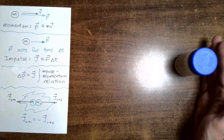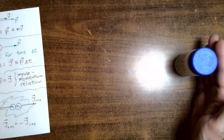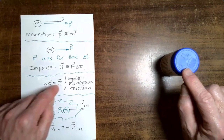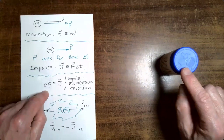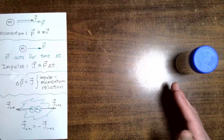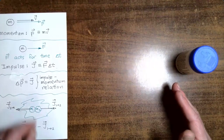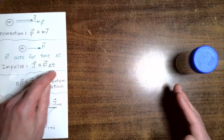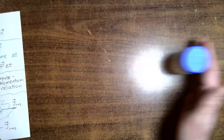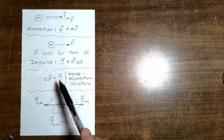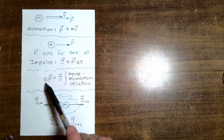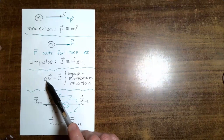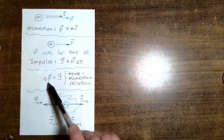Let's say I give a small impulse to the bottle by pushing for a short time. You can see that when I give a small impulse to the bottle, we get a small change in the bottle's momentum. On the other hand, if I deliver a big impulse by applying that same force for a longer time, you can see that by delivering the bigger impulse, I got the bigger change in momentum. So: small impulse, small change in momentum; big impulse, big change in momentum.